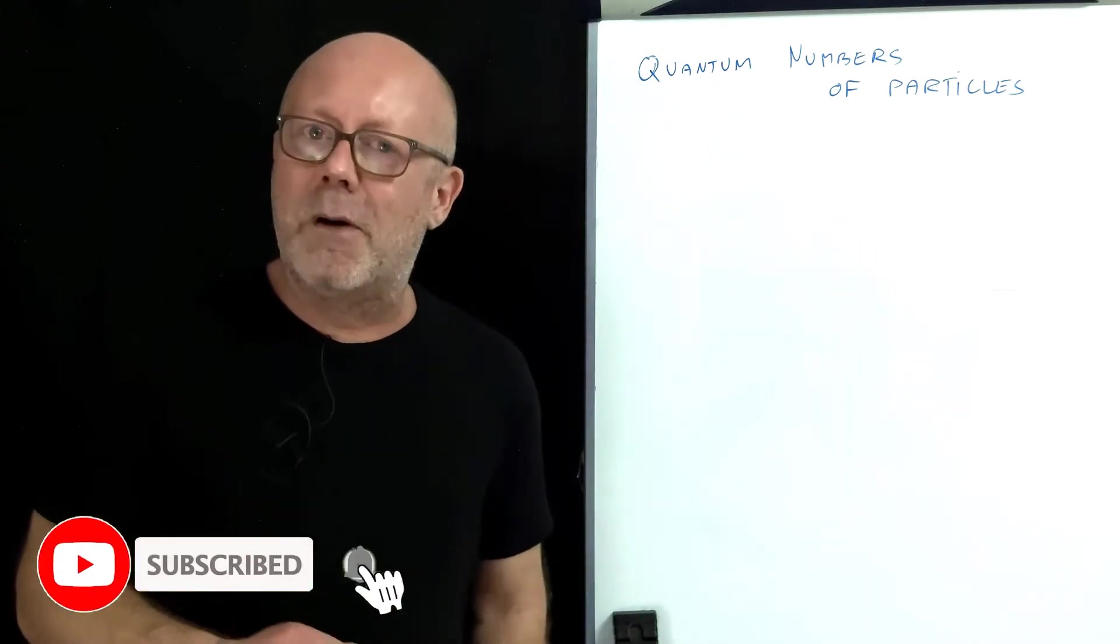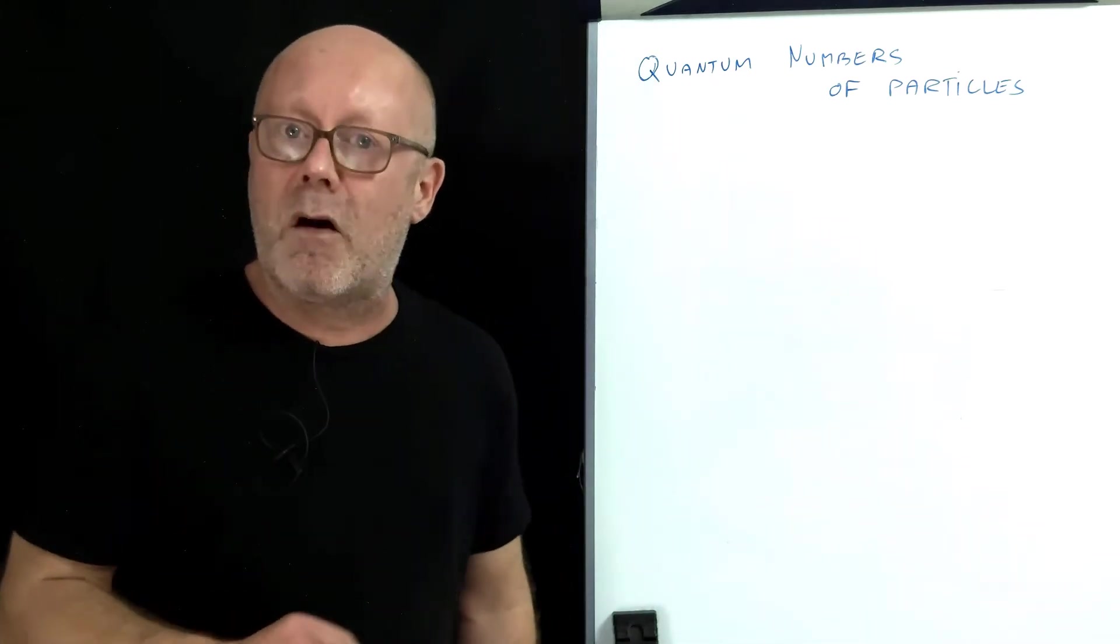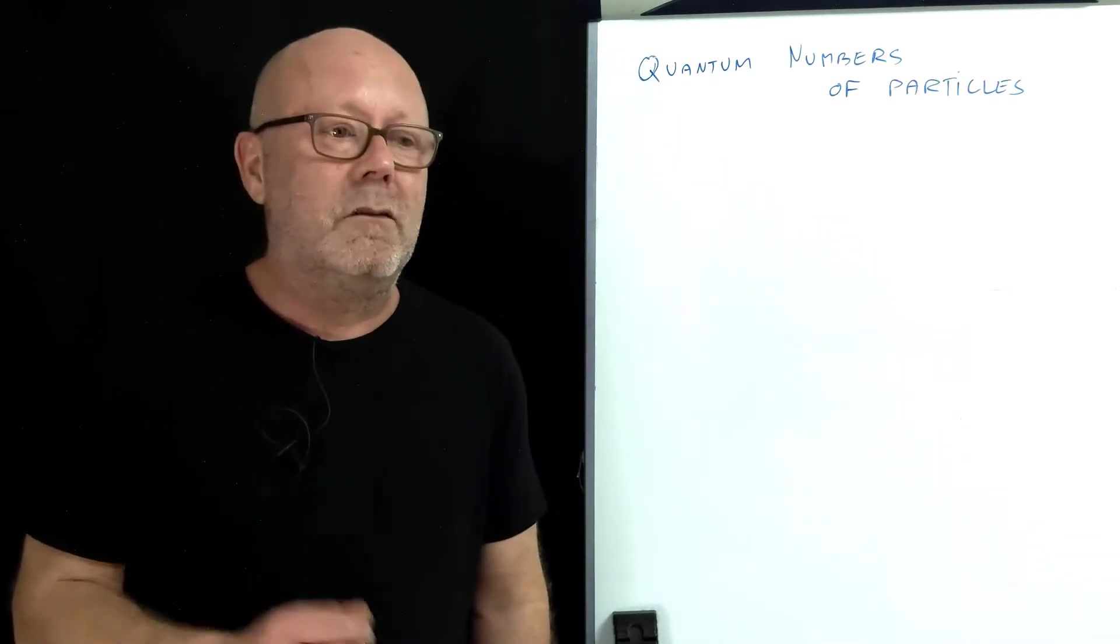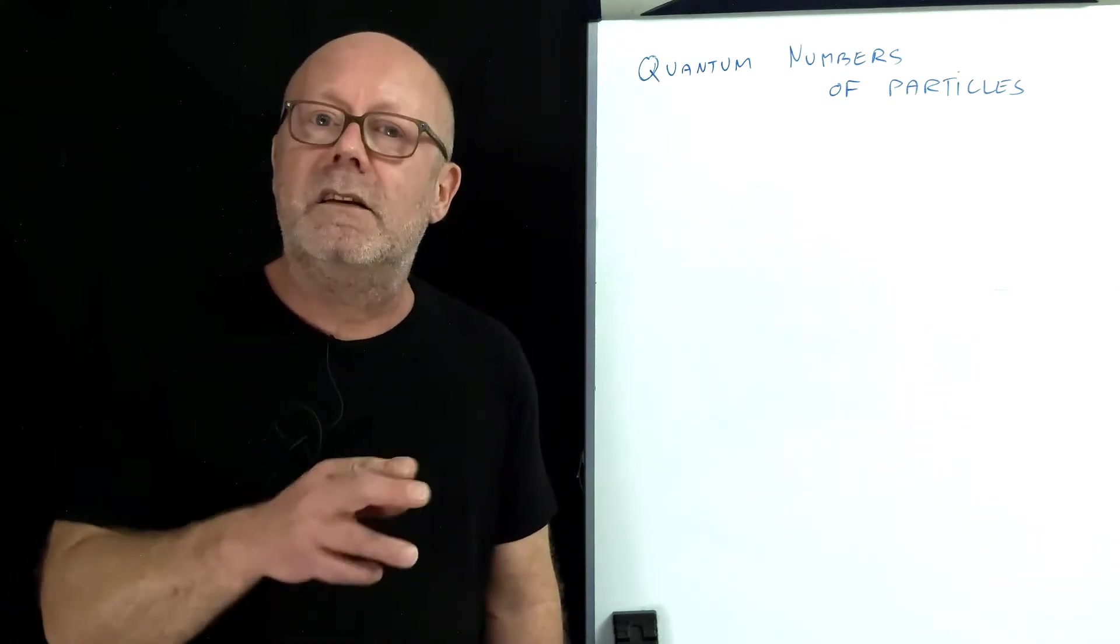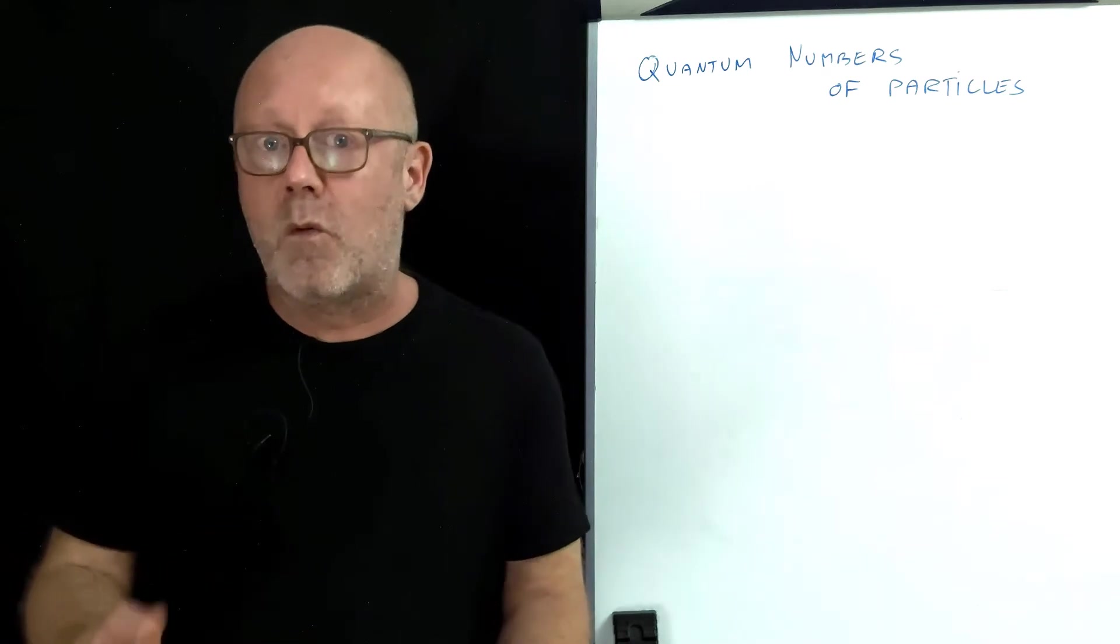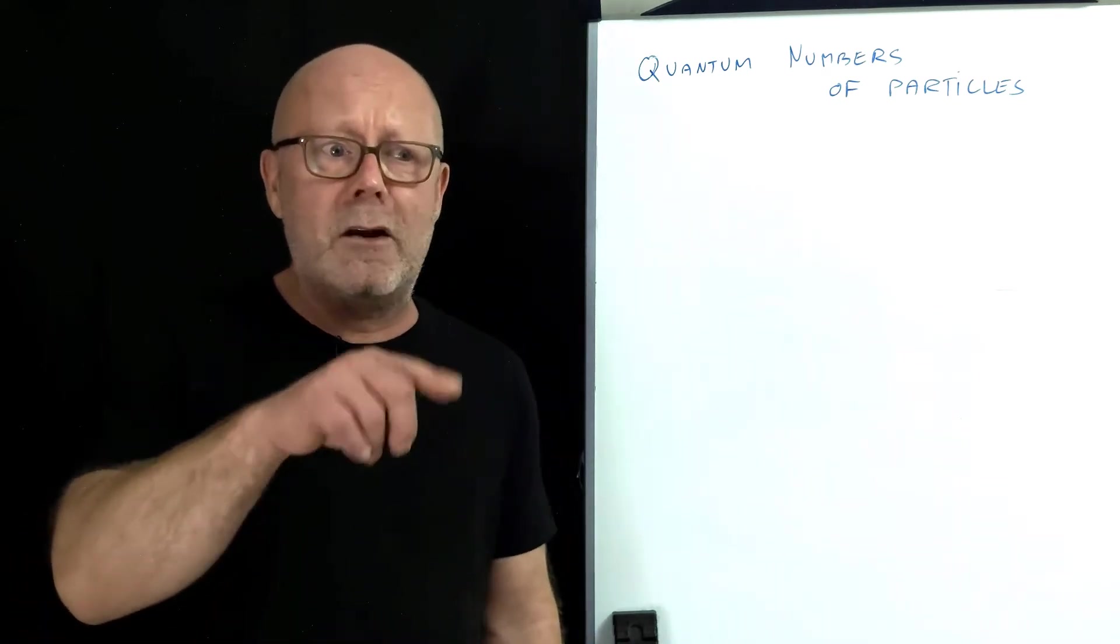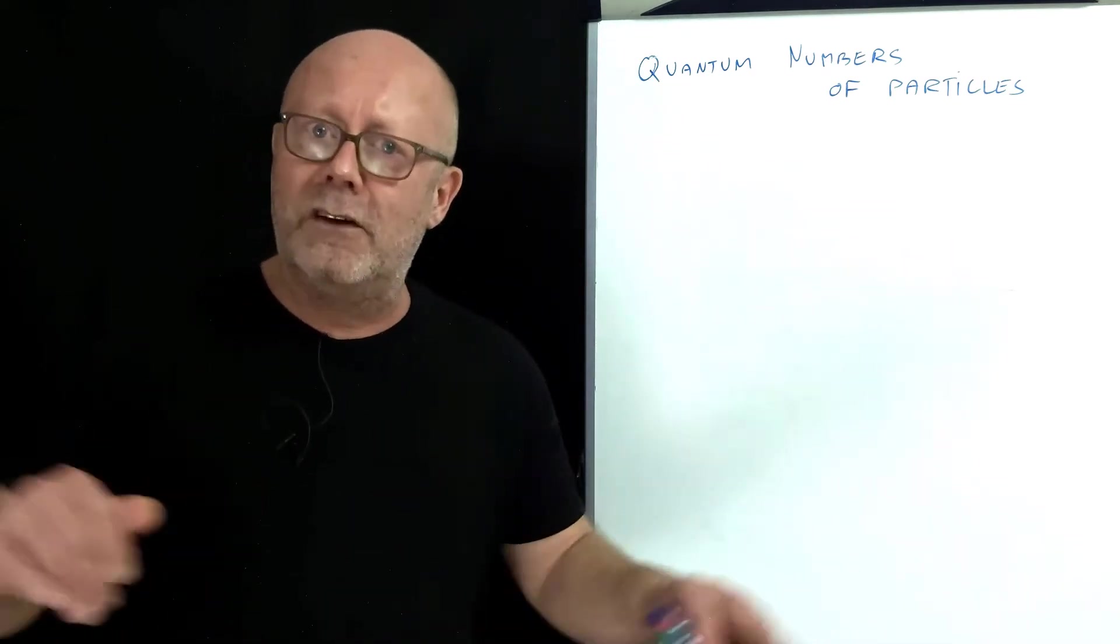In classical physics, a particle is seen like a tiny little marble or even a point. In quantum mechanics, it's seen like a localized fluctuation of a quantum field, a little bit like if you had a localized wave on the surface of a lake.